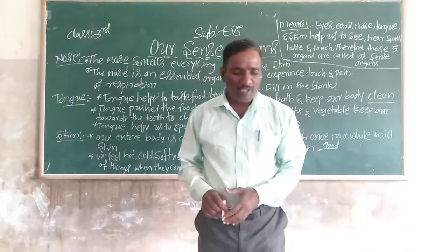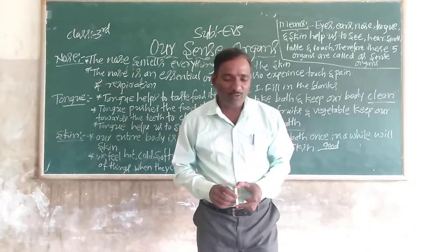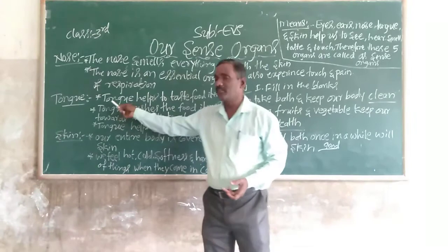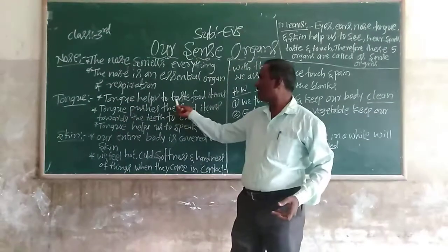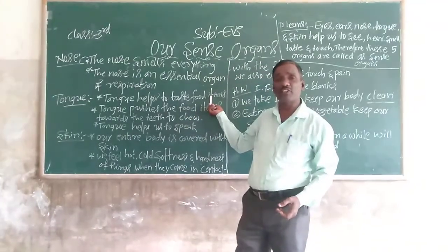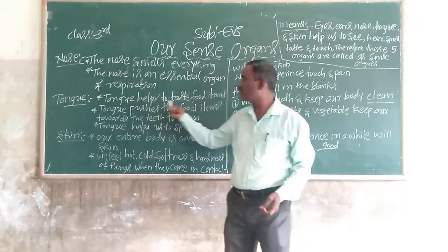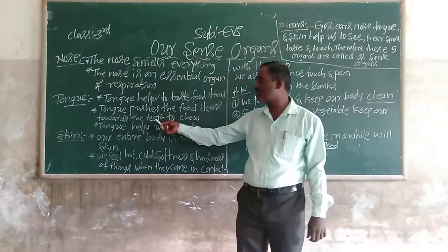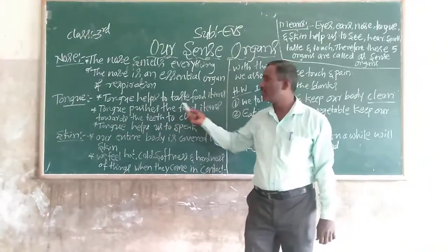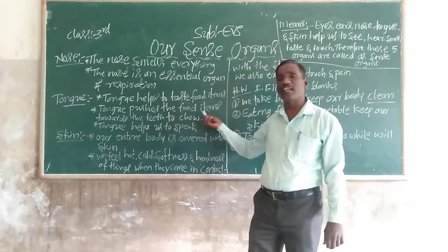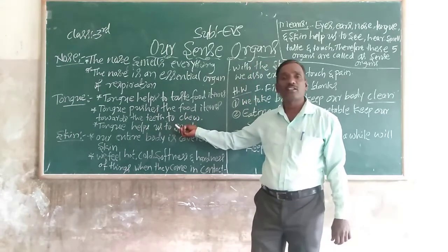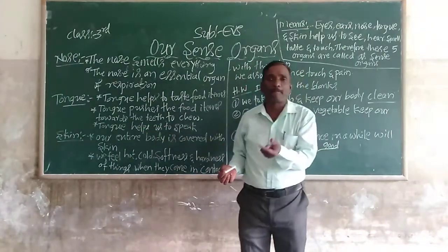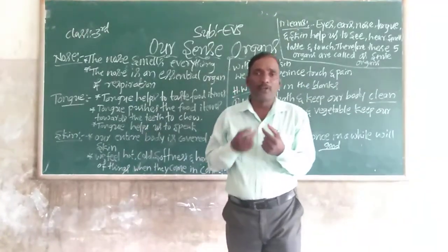How do you know the taste of these items? What organ do you use? The tongue helps us taste different food items. The tongue also pushes food towards the throat. The tongue helps us to speak.